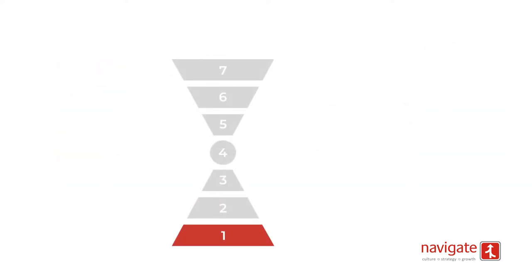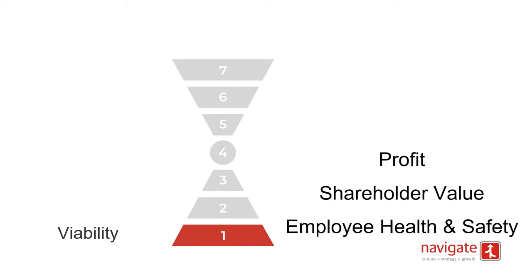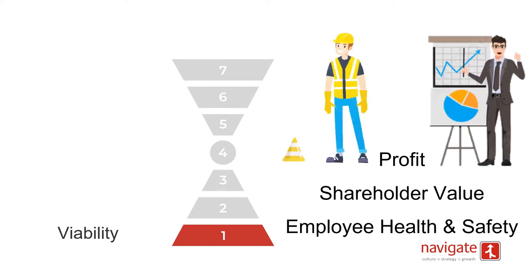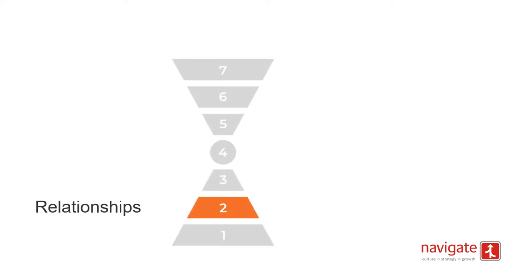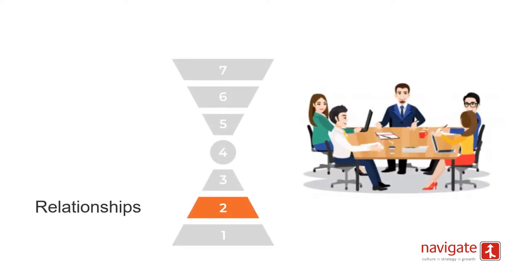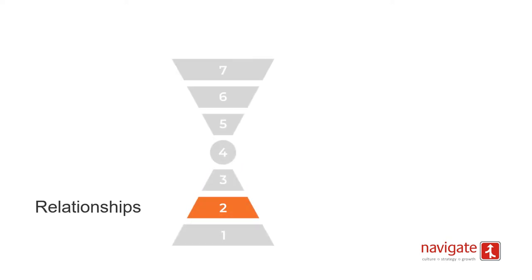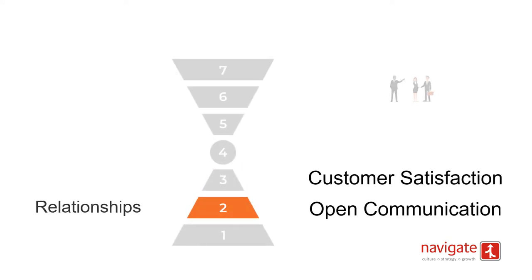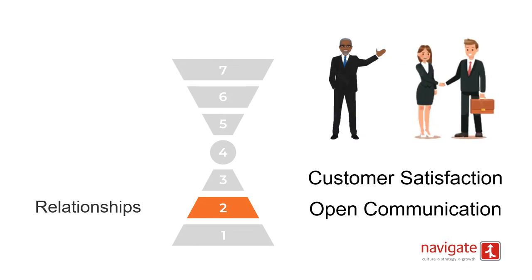Now let's look at each level in more detail. Viability is really about survival — it's here where individuals and organisations show concern for their physical or financial wellbeing. Relationships is where the importance of interpersonal relationships comes into the picture. It addresses the need to communicate and interact with others with a sense of community and respect.